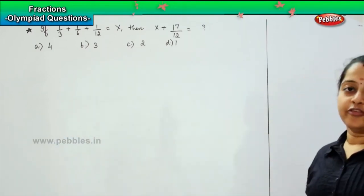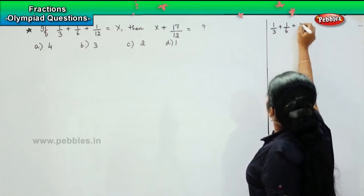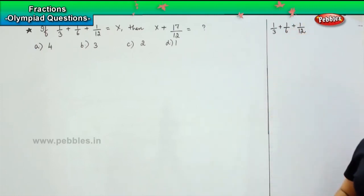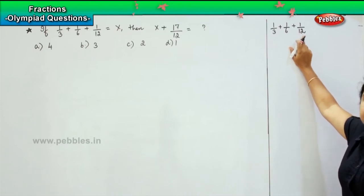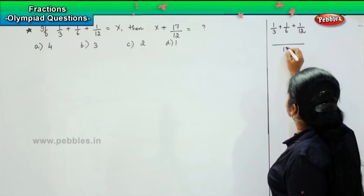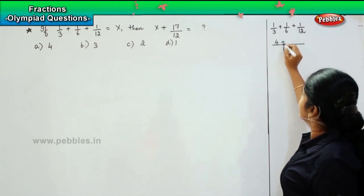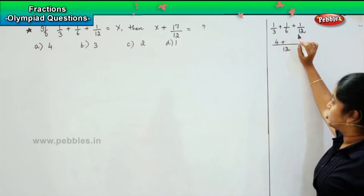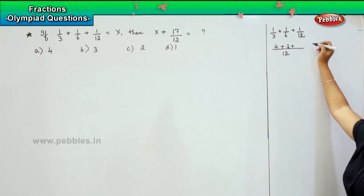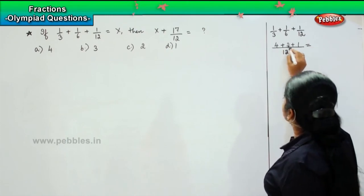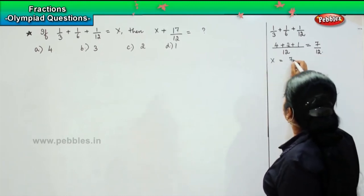First we need to find out the value of x. So 1/3 plus 1/6 plus 1/12 — the common denominator divisible by all three is 12. Converting all fractions: 1/3 becomes 4/12, 1/6 becomes 2/12, and 1/12 stays as 1/12. So 4 plus 2 plus 1 gives us 7, making x equal to 7/12.